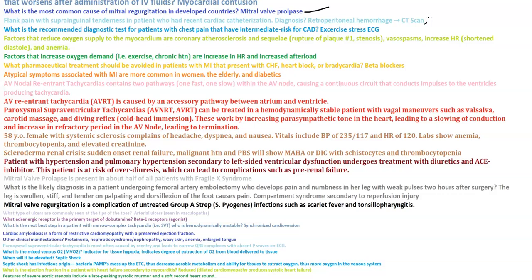Factors that reduce oxygen supply to the myocardium include coronary atherosclerosis and sequelae, vasospasms, increased heart rate, and anemia. Factors that increase oxygen demand, such as exercise and chronic hypertension, lead to increased afterload.